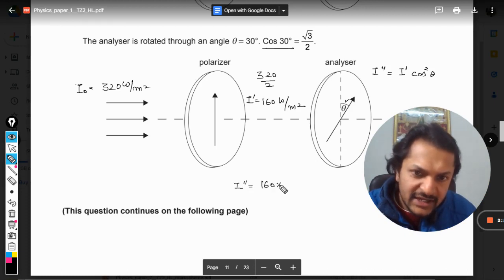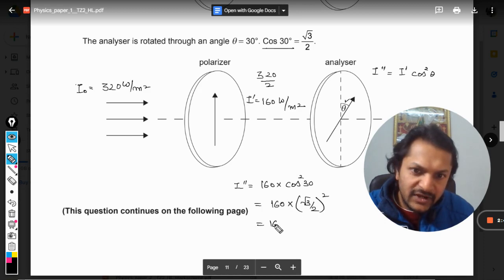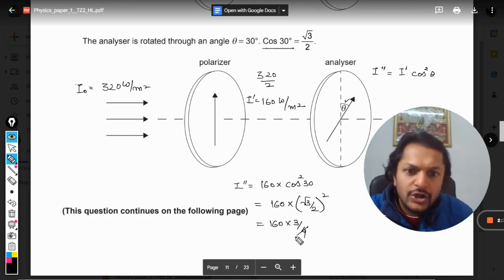So I double dash is given by 160 into cos squared 30. So 160 into square of root 3 by 2, and it will come out to be 160 into 3 by 4. So this is 40 into 3, and that is 120 watts per meter squared.